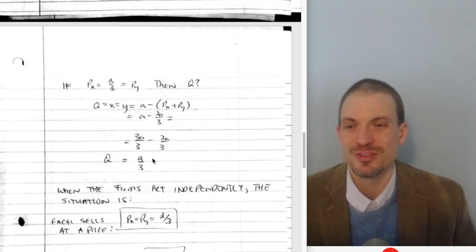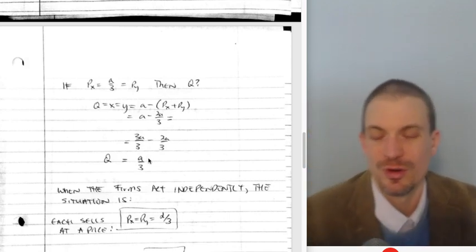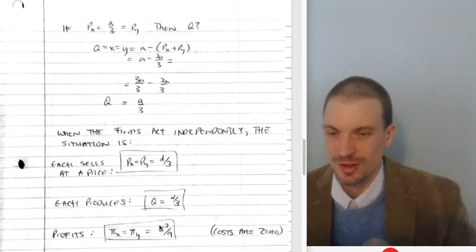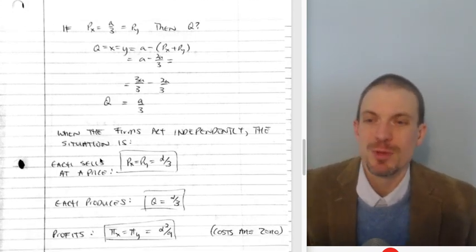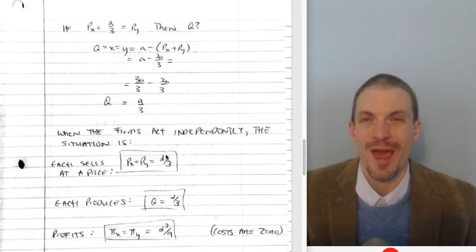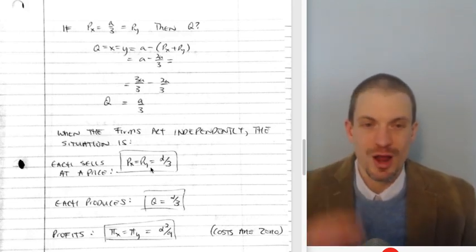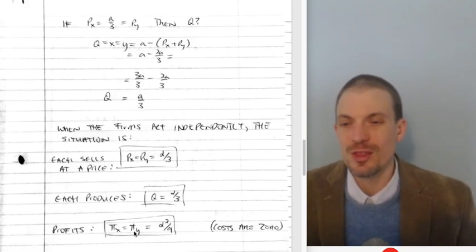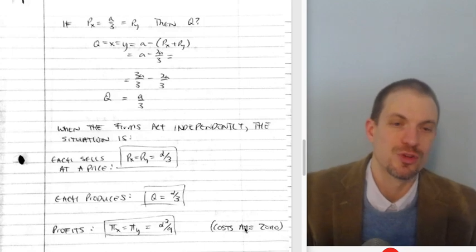to be A over 3 with no cost, or with no cost, you can think of what the profits are going to be. And so we'll see that down below in a second. It's going to be A squared over 3. But anyway, here's the situation when the firms are acting independently. Each price is going to be A or alpha over 3. Each produces a quantity of A or alpha over 3. And then the profits for the two firms are going to be A squared over 9. Alright, and we're assuming zero costs.